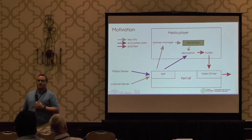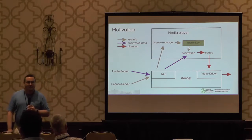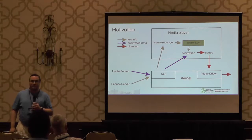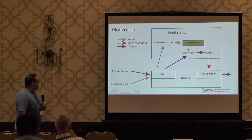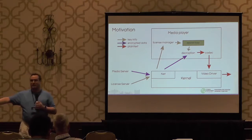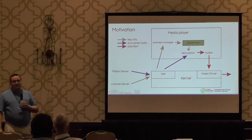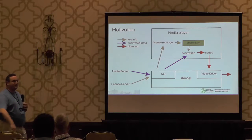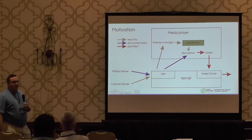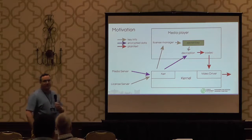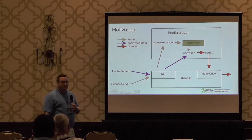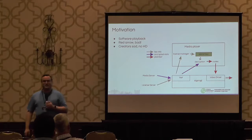Imagine you sit down at your Linux machine and you'd like to play a video. This diagram is a typical view of what goes on when that happens. Think of a horizontal barrier between user space and kernel space, with the kernel at the bottom and some kind of media player up at the top. We start out with protected content on a server on the internet, encrypted with some key that theoretically the user does not have access to.